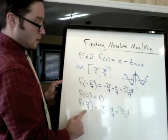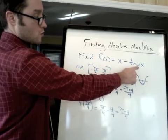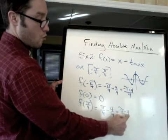And here, when you plug in pi over 4, you get pi over 4 minus tan of pi over 4 is 1. So you get pi over 4 minus 1, which is pi minus 4 over 4.